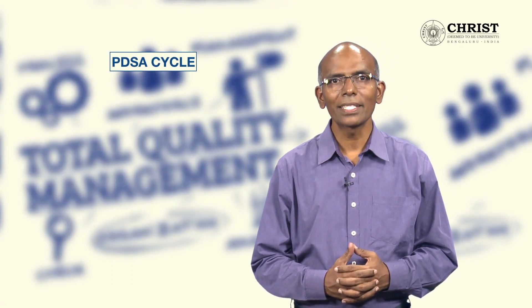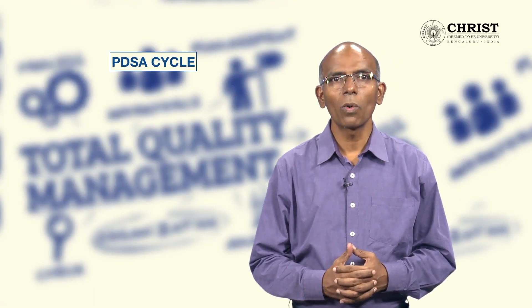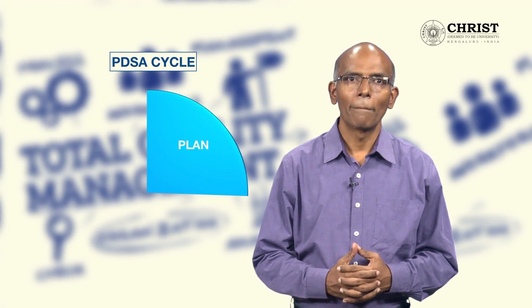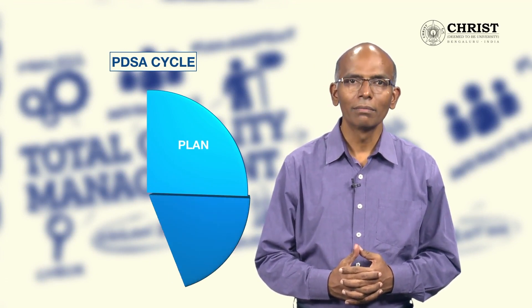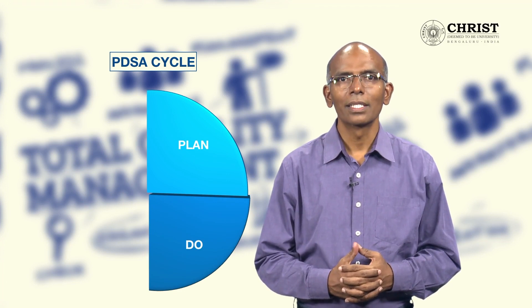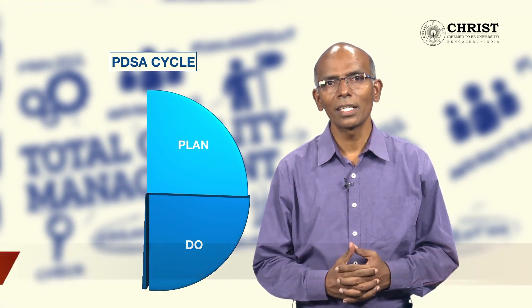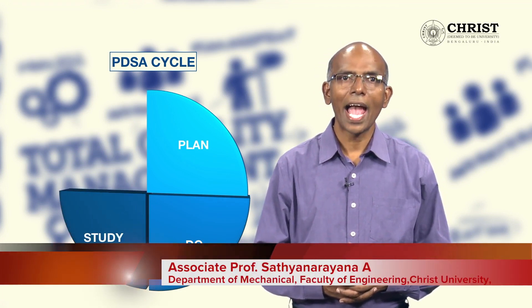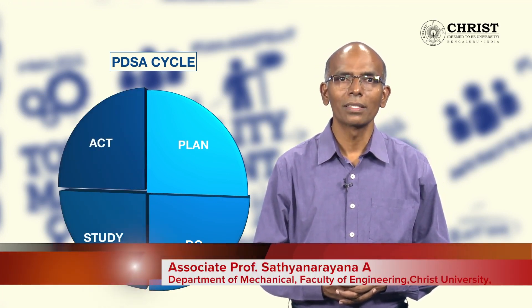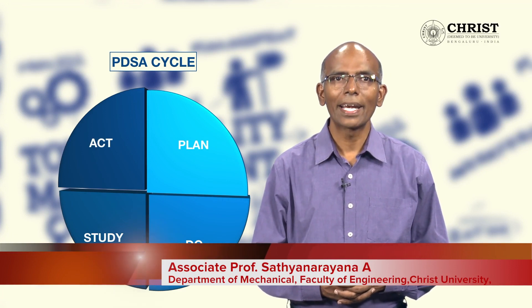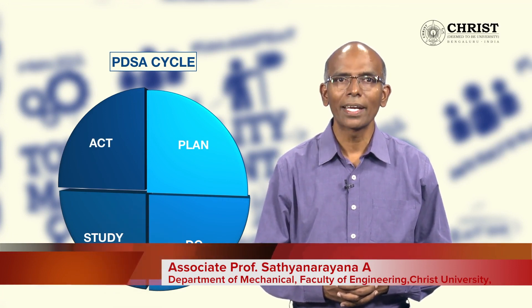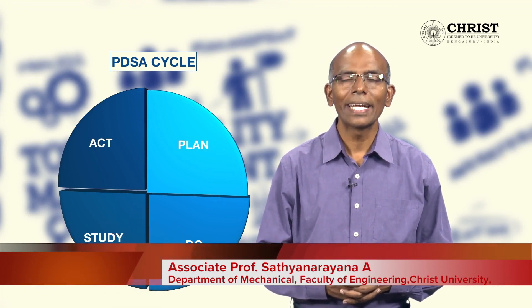The PDSA cycle is a four-step process. First, plan what is to be done; next, do it; third, study the results; and finally, act on the results by identifying what worked as planned and what didn't.